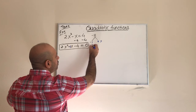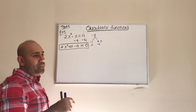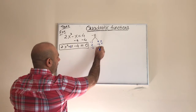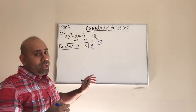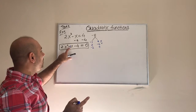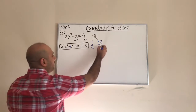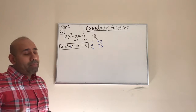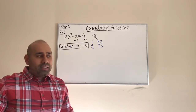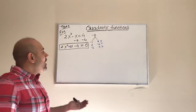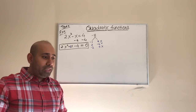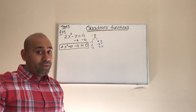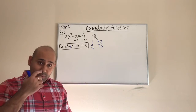Next I try 2 and negative 4: their sum is negative 2, not negative 1. Then negative 2 and positive 4: their product is negative 8, but their sum is positive 2. I'm running out of options because there are no other factor pairs of negative 8. So we have to stop and ask ourselves: can we actually factor this polynomial? The answer is no — we cannot factor it.